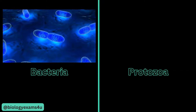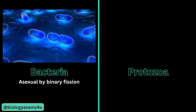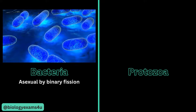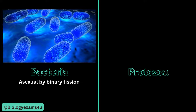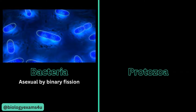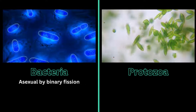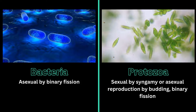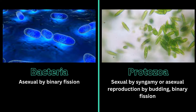Regarding reproduction in bacteria, the normal method is asexual reproduction — that is binary fission. There is also a primitive form of sexual reproduction called conjugation, which occurs during unfavorable conditions. In the case of protozoans, they can reproduce sexually or asexually: sexual reproduction by syngamy or sexual fusion of gametes, and asexual reproduction by budding and binary fission.